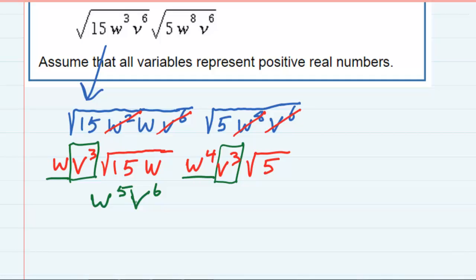And then underneath the radical, when I multiply it still underneath the radical, 15 times 5 is 75, and the w is still underneath the radical.